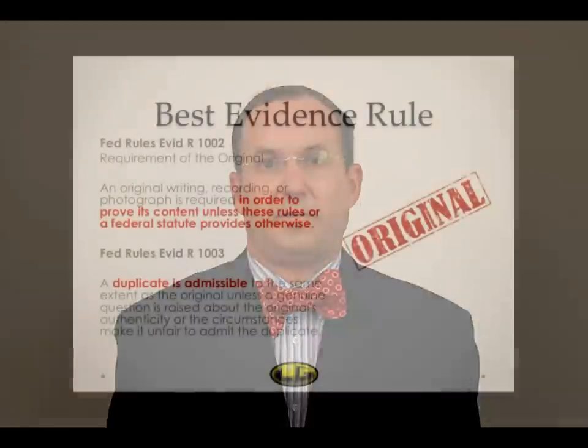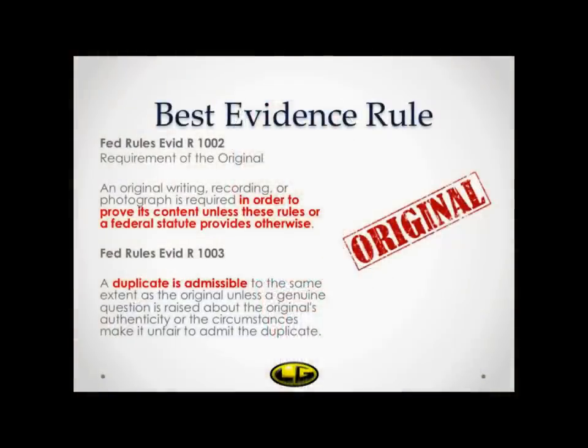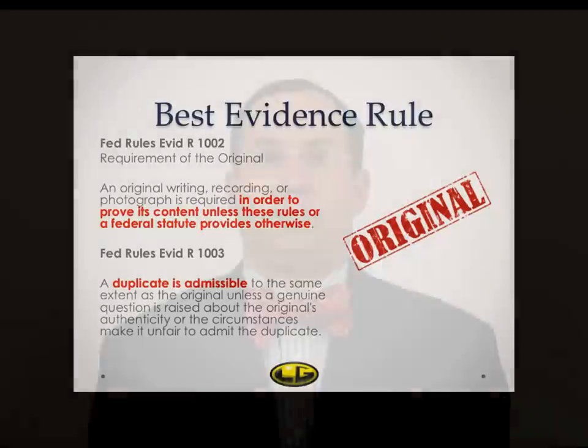First, since we are talking about a code section, let's look at the Federal Rules of Evidence. The best evidence rule is addressed under Federal Rule of Evidence 1002. The rule states an original writing, recording, or photograph is required in order to prove its contents unless these rules or a federal statute provide otherwise.